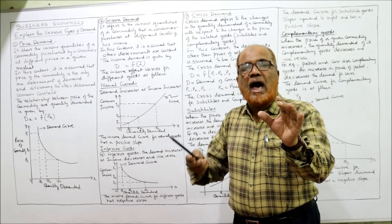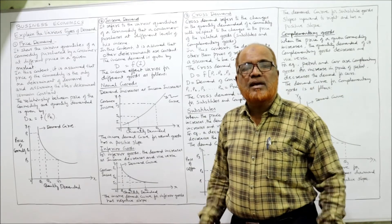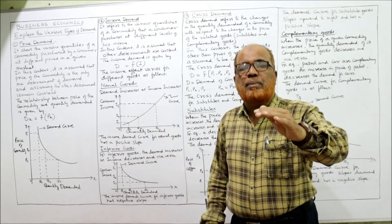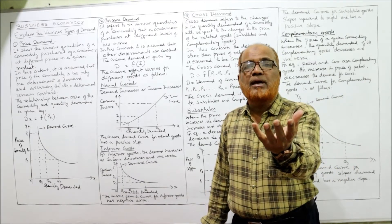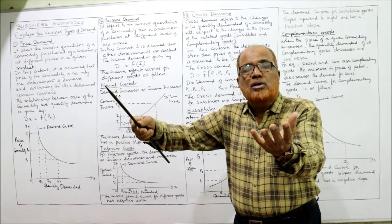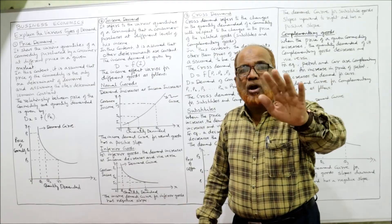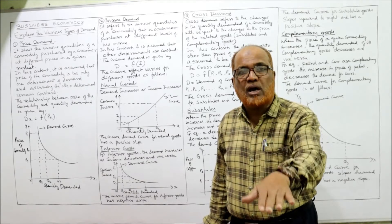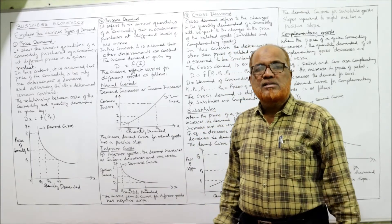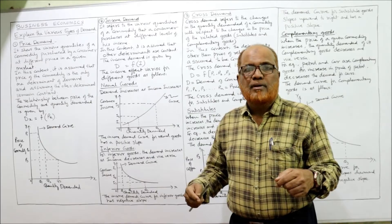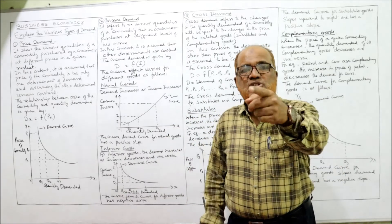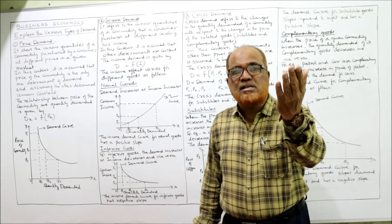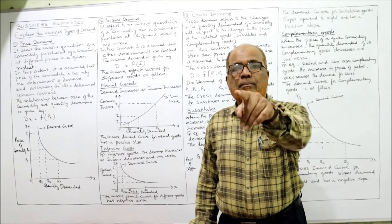For inferior goods, as income increases, demand decreases. For example, small cars: as income increases, people switch from small cars to big cars, reducing demand for small cars. Similarly, when income increases, people switch from bicycles to bikes, making bicycles an inferior good. So there is a negative relationship between income and demand for inferior goods.